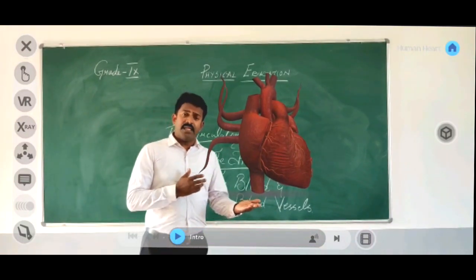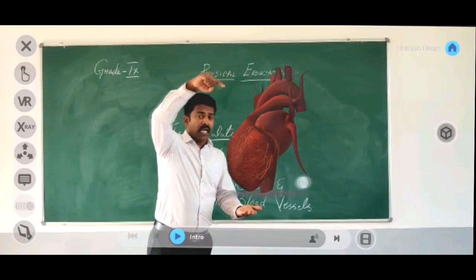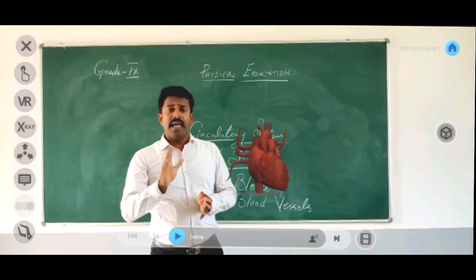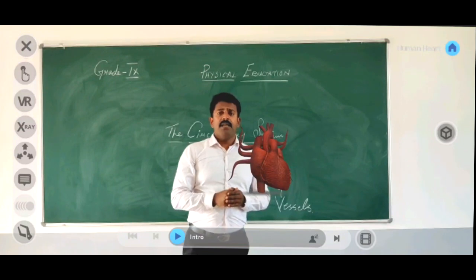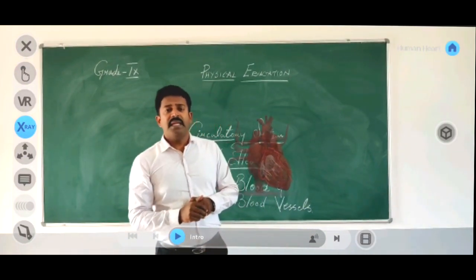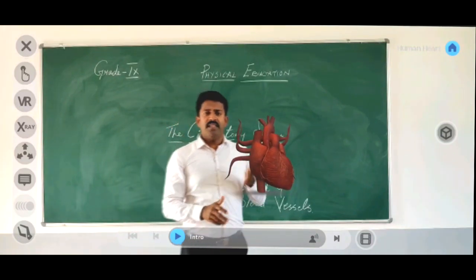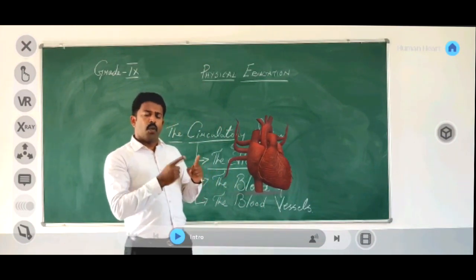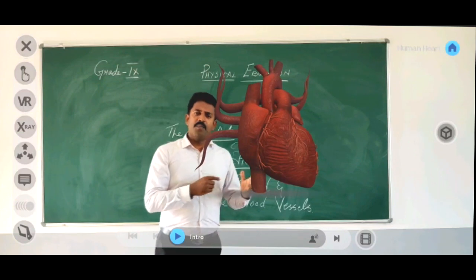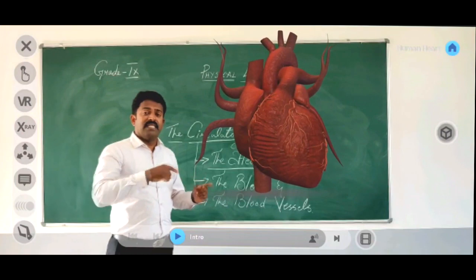The weight of the heart is 300 to 350 grams on average. The heart is covered by the pericardium. Its main function is to transport the blood to all parts of the body. Per minute, 70 ml of blood is pumped. The heart beats 70 to 72 times per minute, and per minute 5 liters of blood is being pumped. In the circulatory system, the heart is one of the major organs which plays a very important role.